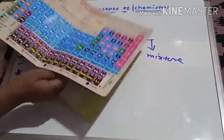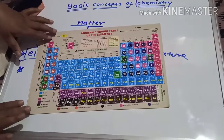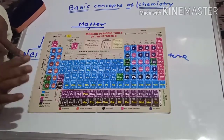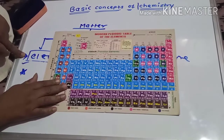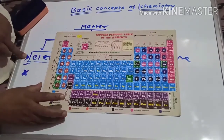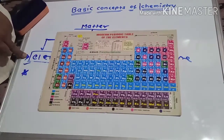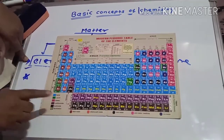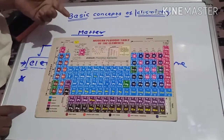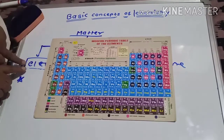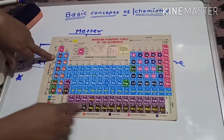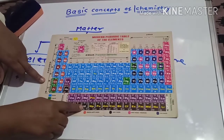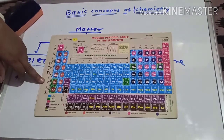Today, there are about 118 elements known. We are going to clear this concept because in chapter 3 — periodic classification of elements — we must know the classification of elements, what is made by group, what is made by period, the position of elements in the periodic table, atomic number, and electronic configuration. Out of 118 elements, 92 elements are naturally occurring and the remaining are synthetically prepared or manmade.